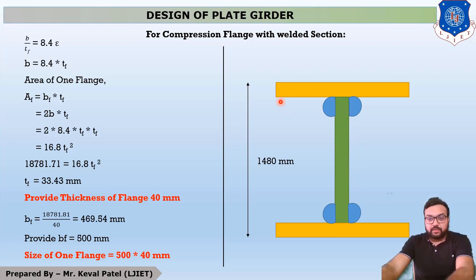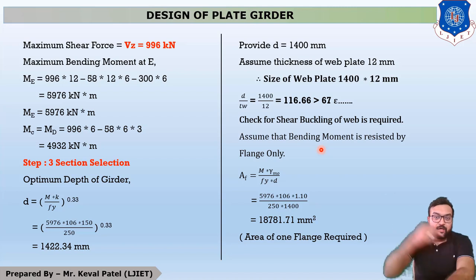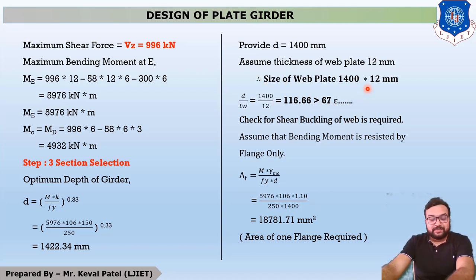Moving to the flange portion: the flange resists bending moment, as discussed in the plate girder chapter. The value of small d (web depth) is 1400 mm and the web thickness tw is 12 mm. The ratio d/tw = 116.66, which is greater than 67ε. This is check number 4, which will be discussed in step number 4. Now we move to find the size of the flange portion.